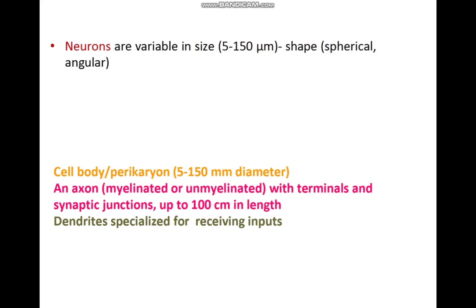Neurons are of variable size, ranging from 5 to 150 microns in diameter. Their shape is spherical and sometimes angular. The axon, which may be myelinated or unmyelinated, has terminals and synaptic junctions and can be up to 100 centimeters in length. That is the reason the neuron is called the longest cell in the body.